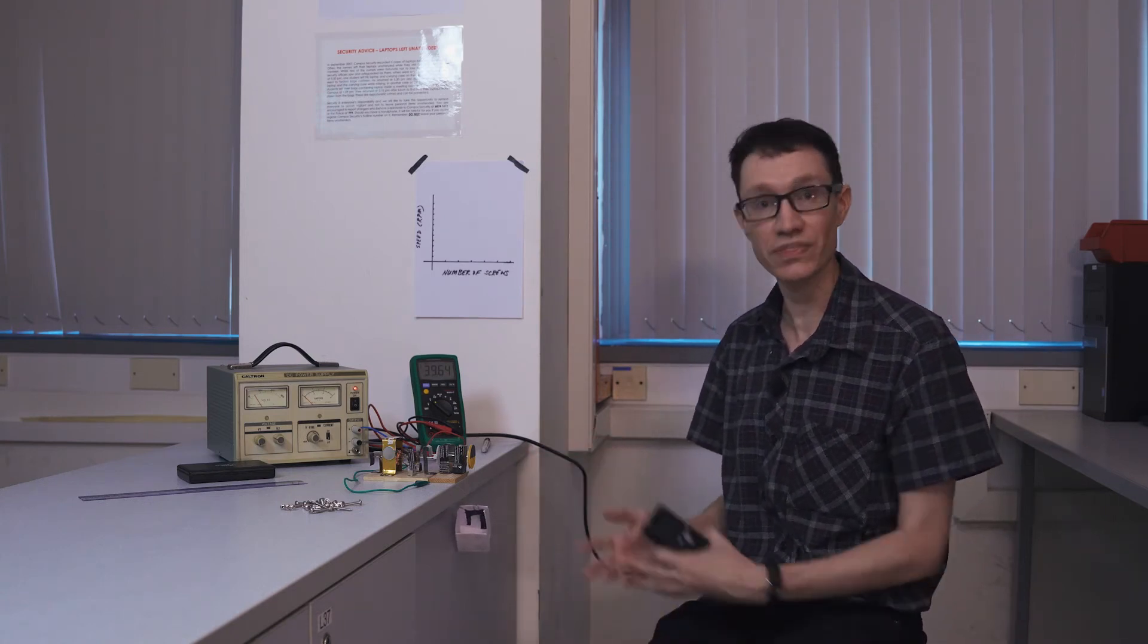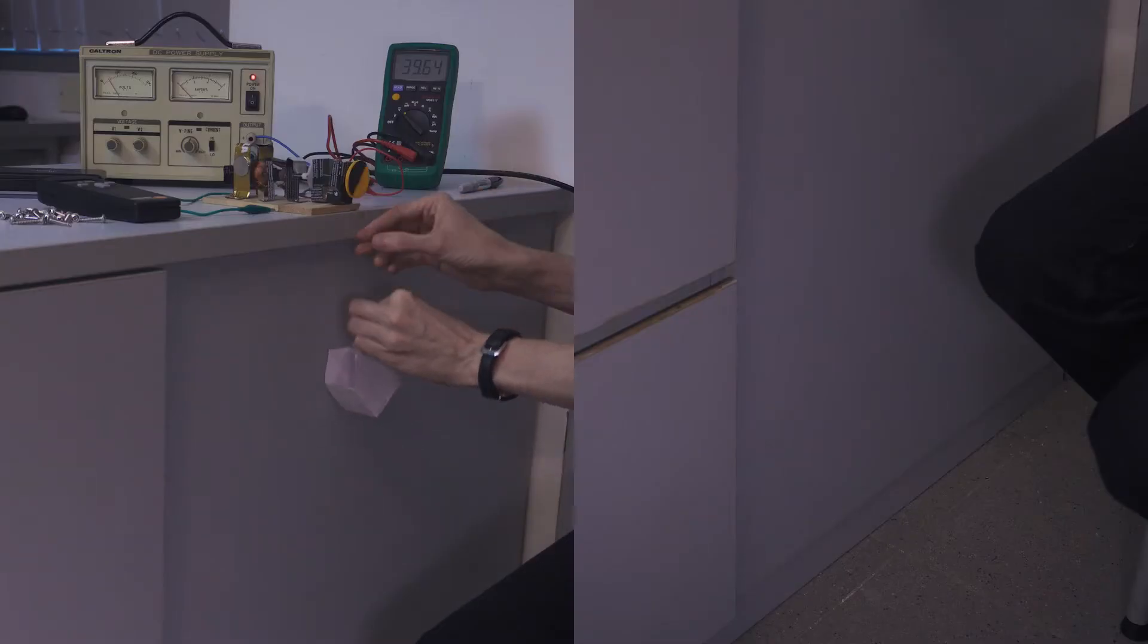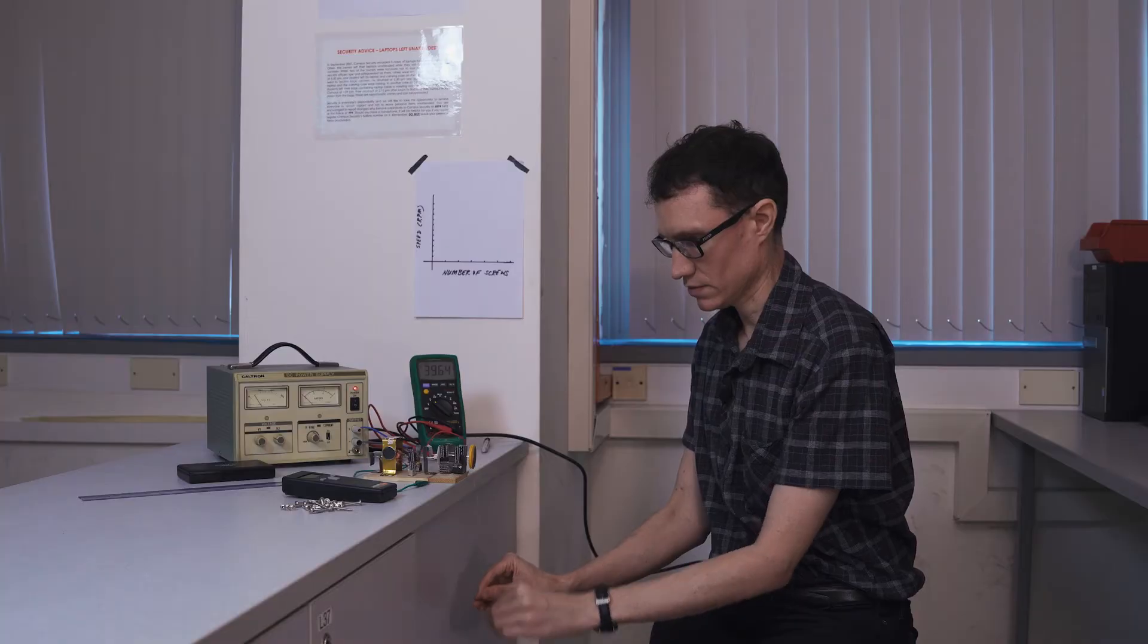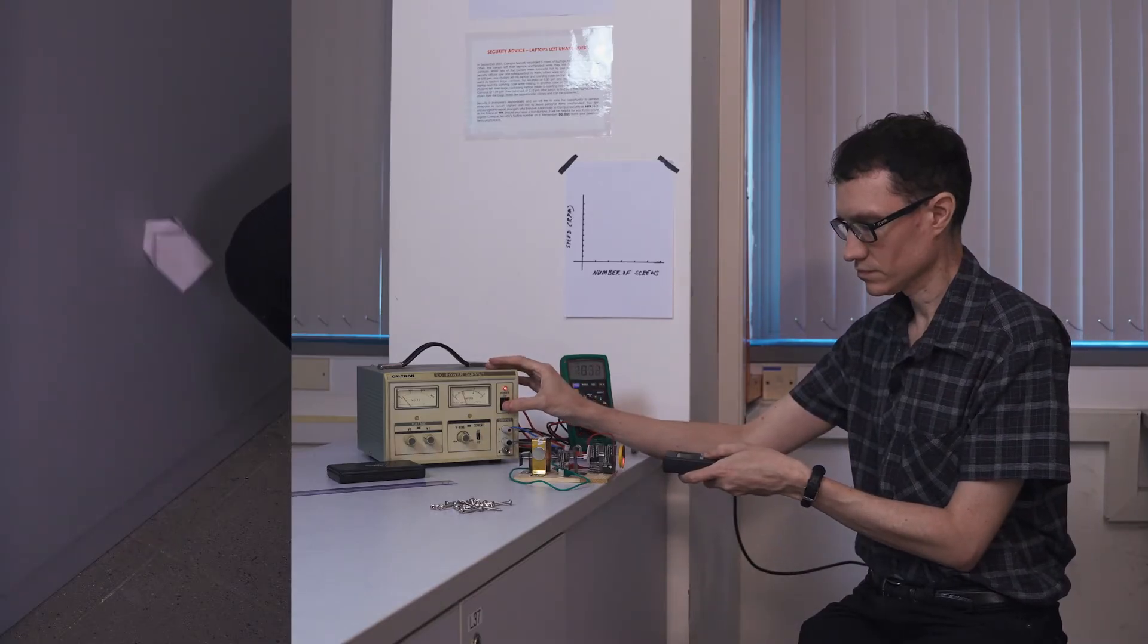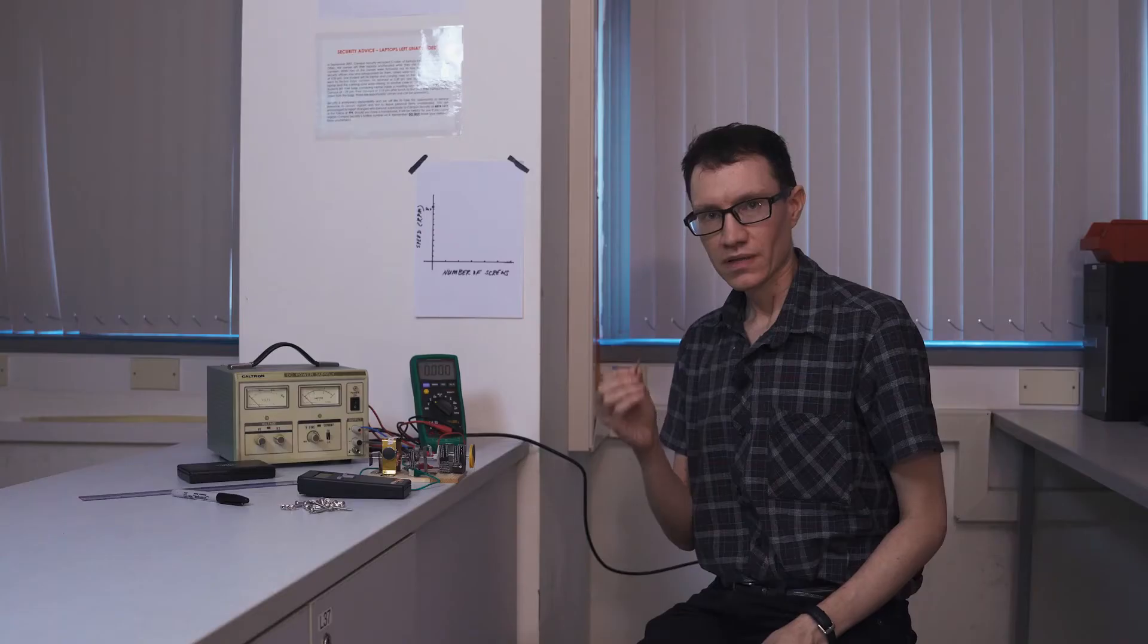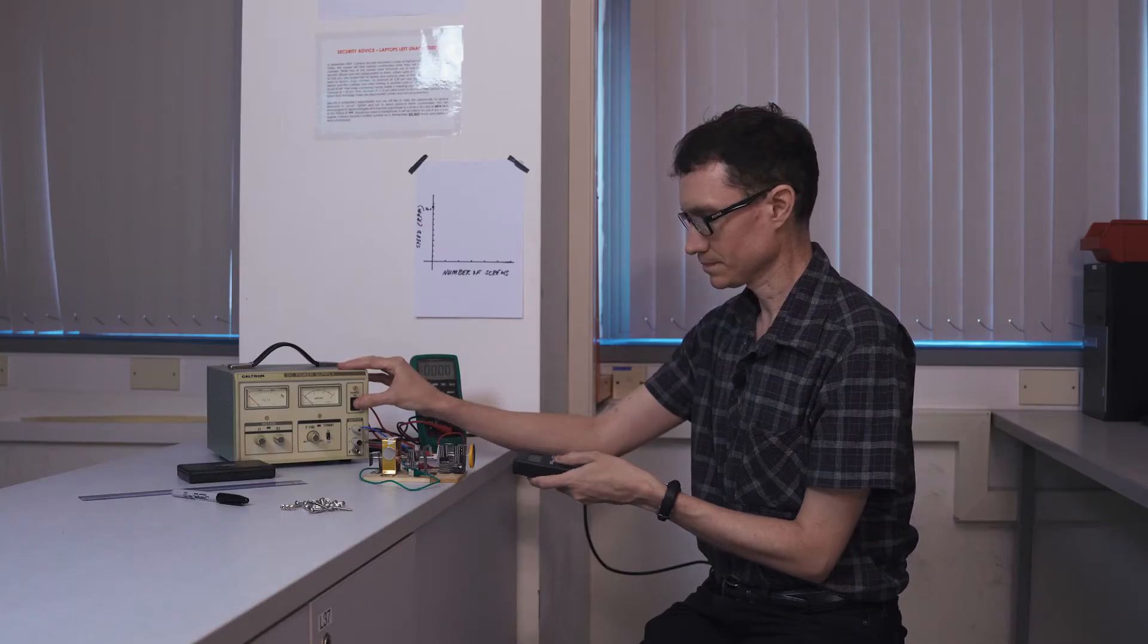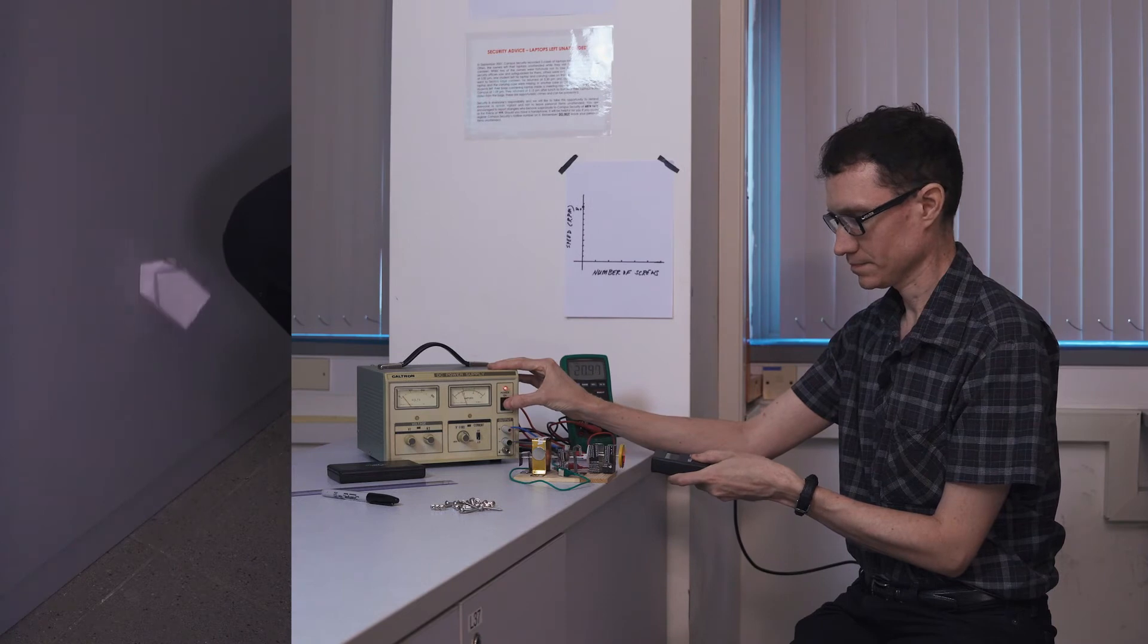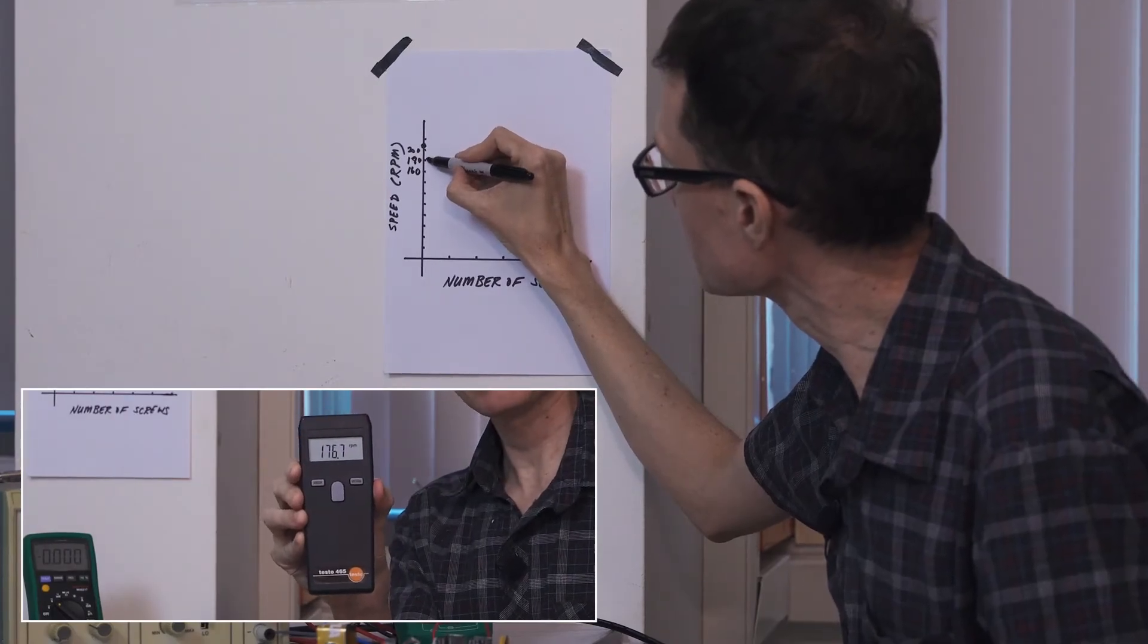Let's go ahead and see how fast this motor can spin without any screws in the bucket. 204 RPM. Let's put one screw in the bucket and see if the speed changes. 177 RPM.